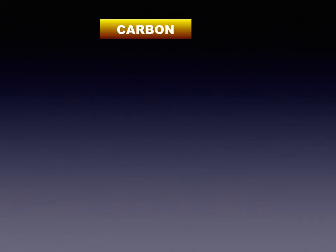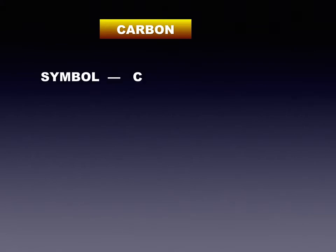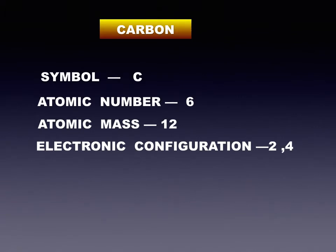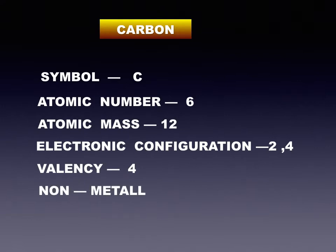The element carbon is available abundantly in nature and occurs in free as well as in the combined state. In this chapter we shall study the properties of the non-metallic element carbon. The symbol of carbon is C, atomic number is 6, atomic mass is 12, electronic configuration is 2, 4, hence the valency is 4. It is a non-metallic element.